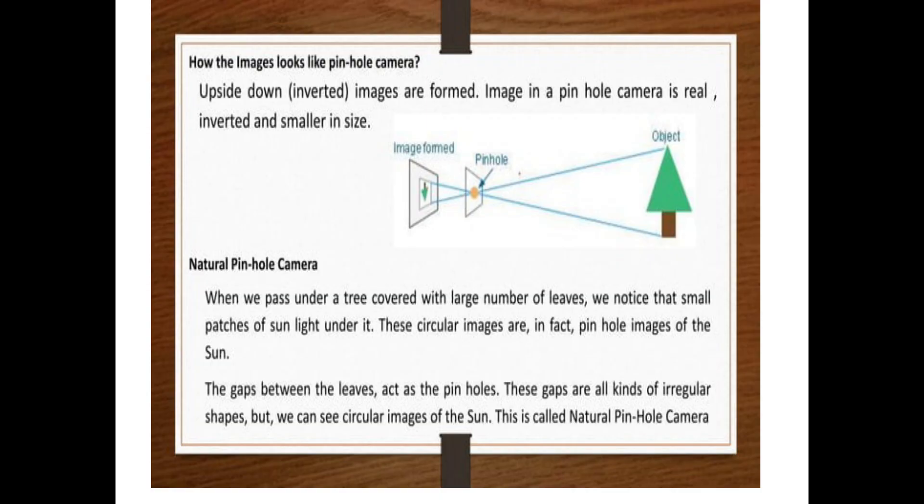Natural pinhole camera is present in our surroundings. When we pass under a tree covered with a large number of leaves, we notice small patches of sunlight under it. These circular images are in fact pinhole images of the sun. The gaps between the leaves act as the pinholes. These gaps are all kinds of irregular shapes, but we can see circular images of the sun. This is called natural pinhole camera.